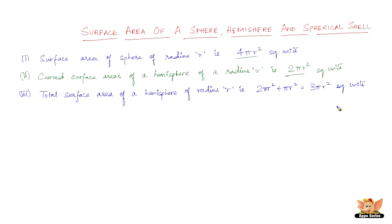Let me show you here. If this is the hemisphere, the curved surface area is this one — the shaded portion in blue. The pi r square is the area of the circular section. So you need to add this plus this to get the total surface area. Therefore it is 2 pi r square, which is the curved surface area of a hemisphere, plus pi r square, which is the area of the circular section, which is the base of this hemisphere. And that is equal to 3 pi r square square units.